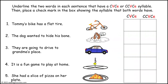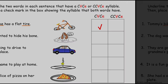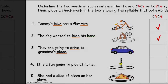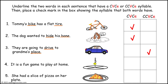Now have kids underline the two words in each sentence that have a CVC silent E or CCVC silent E syllable, then place a check mark in the box showing the syllable that both words have. Bike and tire both have the CVC silent E syllable. Hide and bone both have the CVC silent E syllable. Drive and place both have the CCVC silent E syllable. Game and home both have the CVC silent E syllable. Slice and plate both have the CCVC silent E syllable.